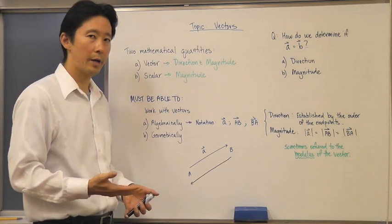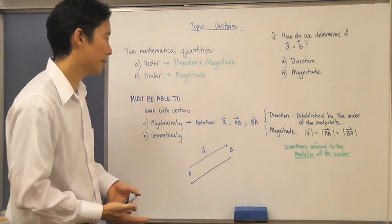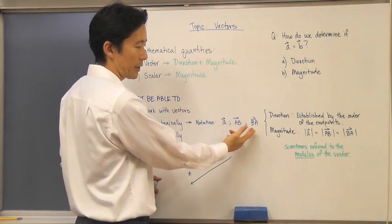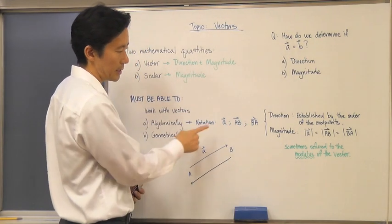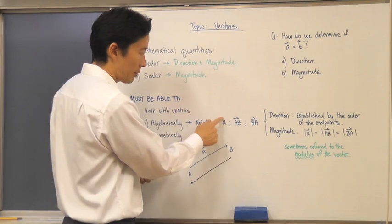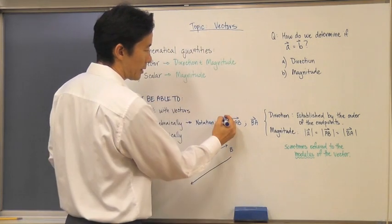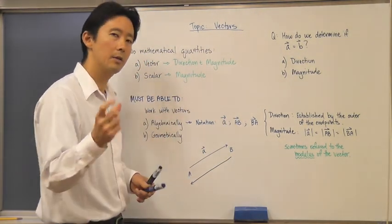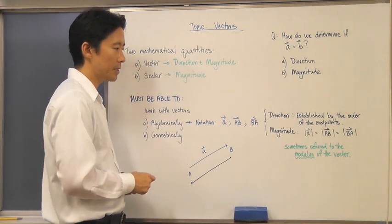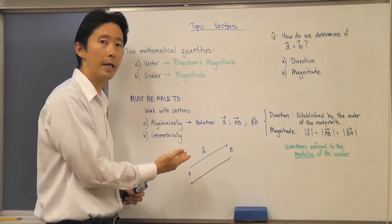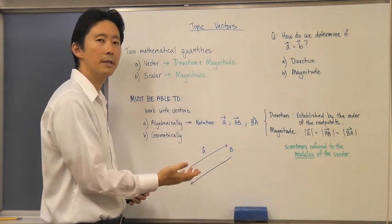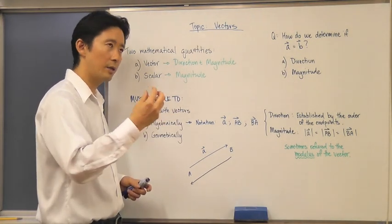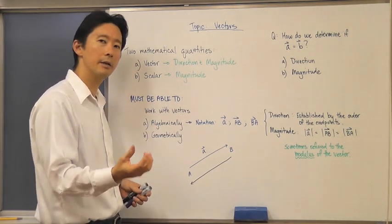Starting with the algebraic side, we need to look at how to write and describe vectors mathematically using notation. We can call this vector a, this vector AB, and this vector BA. Notice that the little arrow above it is always pointing to the right — always going from left to right. Another possible notation is a bold lowercase letter; if you see a bold lowercase letter in the book, it's referring to a vector.